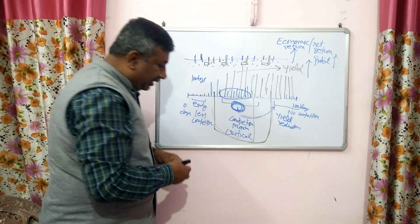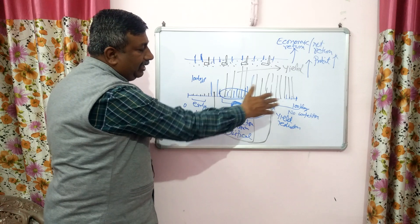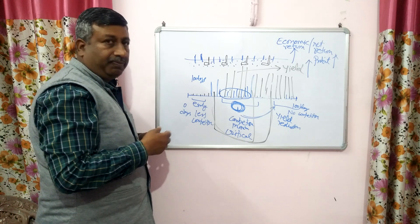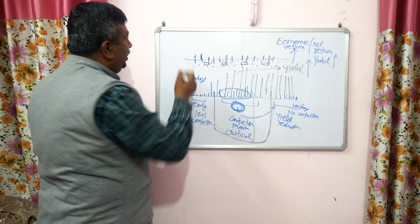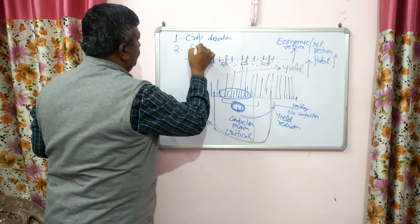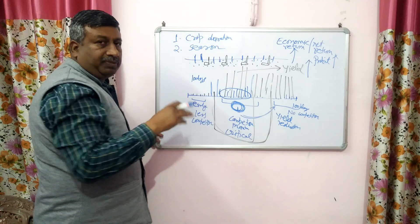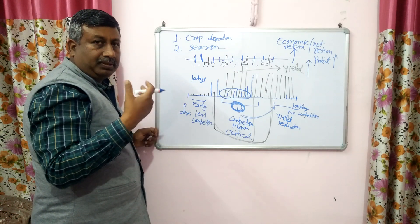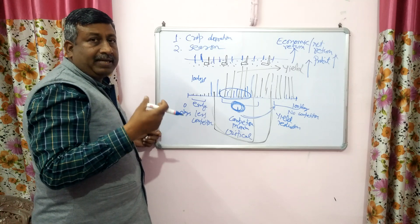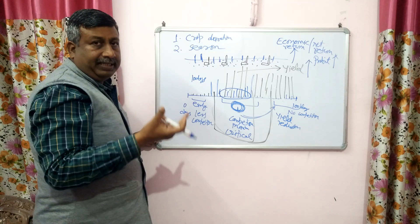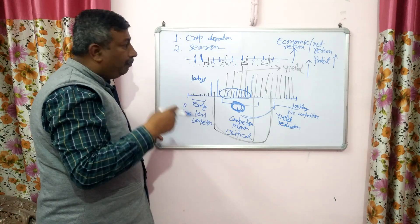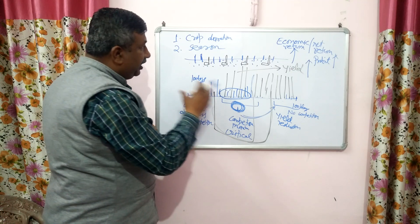This critical period is decided by several factors. Number one: what is the crop duration — 80 days, 60 days, 100 days, 150 days, 200 days (for example, sugarcane). Number two: what is the season? Season also affects crop-weed competition. For example, maize grown in Kharif has a critical weed competition period of about 25 to 30 days, while in winter season it is about 80 to 90 days because germination takes more time in Northern India.